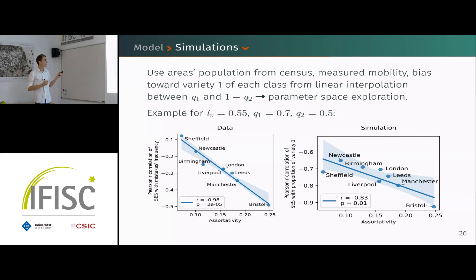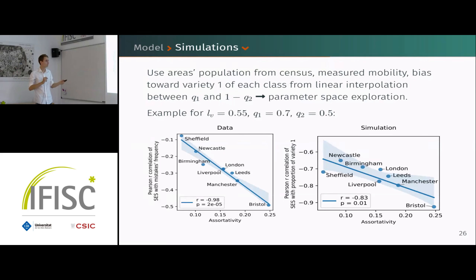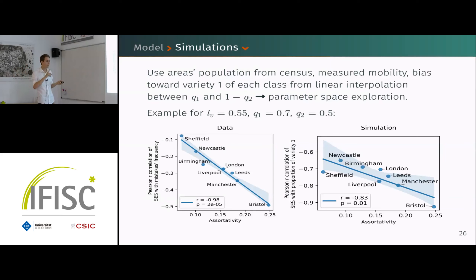The y-axis in the simulation shows the proportion of people speaking variety one (non-standard) in each cell at the end of the simulation — a proxy for frequency of deviations. The ranges differ, but what we are interested in is the tendency when compared against assortativity. Strikingly, we get the same kind of behavior: the more people mix in these cities, even with real mobility, the less the use of one variety depends on socioeconomic class.